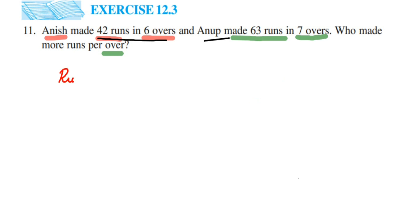So runs made by Anish in 6 overs is equal to 42. And now we have to find out for per over, that is 1 over. So runs made by Anish in 1 over is equal to 42 divided by 6.